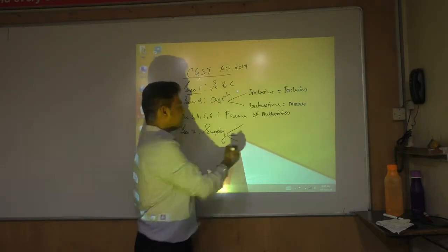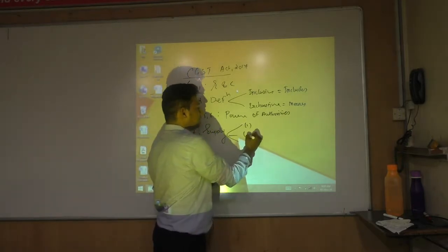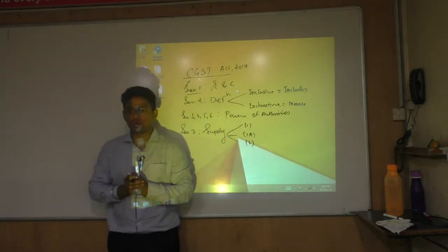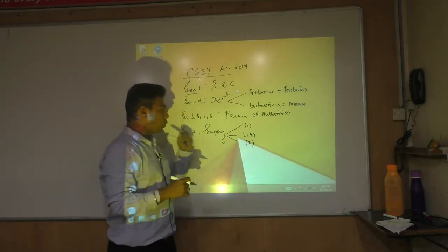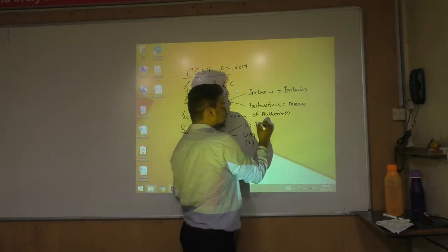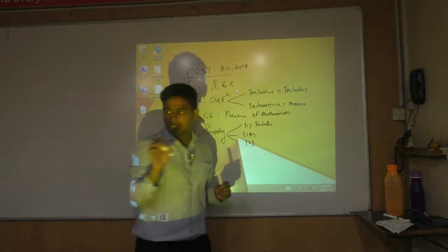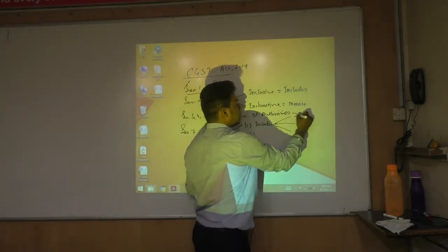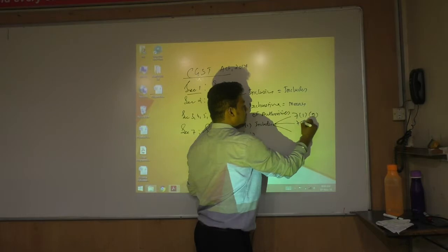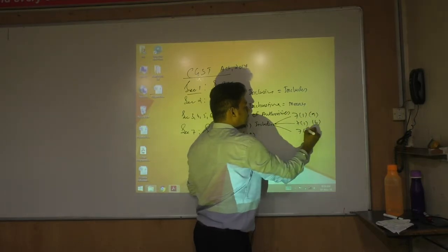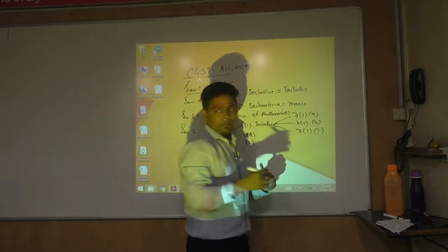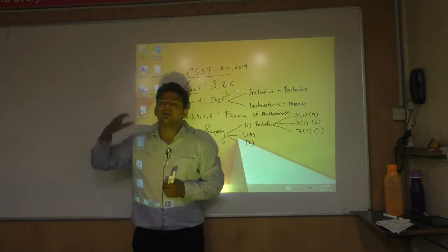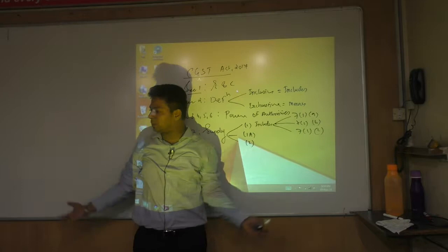Section 7 is divided into three main parts: Section 7.1, Section 7.1a, and Section 7.2. Section 7.1 is further divided — here it is written 'supply includes'. Supply includes three parts: 7.1a, 7.1b, and 7.1c. You should remember this. 7.1a is the core — it says supply includes all forms of supply.